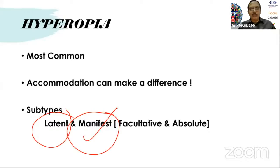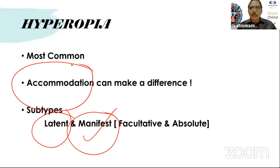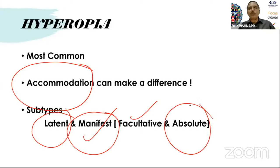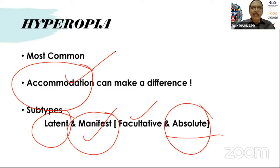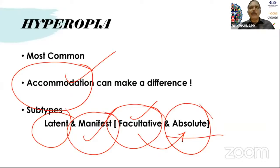The rest of the hypermetropia is manifest. In manifest hypermetropia, the faculty of accommodation can correct some amount — this is called facultative hypermetropia. Whatever remains even after fully accommodating is absolute hypermetropia: the patient has no way of correcting it even with maximum effort. When accommodation amplitude is high, especially in childhood, any amount of hypermetropia can fall in the facultative group. As accommodation wanes with age, facultative hypermetropia converts into absolute hypermetropia and the patient needs correction.